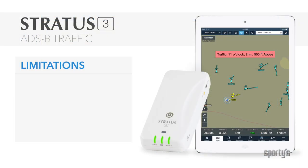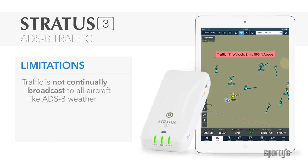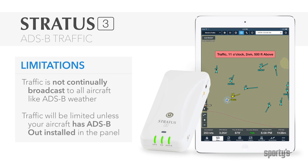Finally, it's important to remember that ADS-B traffic does not work like ADS-B weather. Whereas weather is broadcast to everyone, like an AM radio station, traffic is only broadcast in response to ADS-B out equipped aircraft.